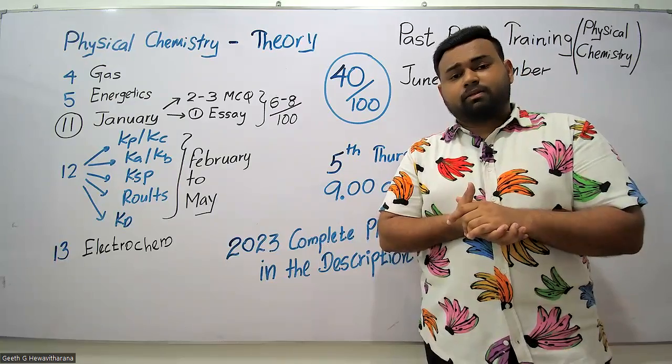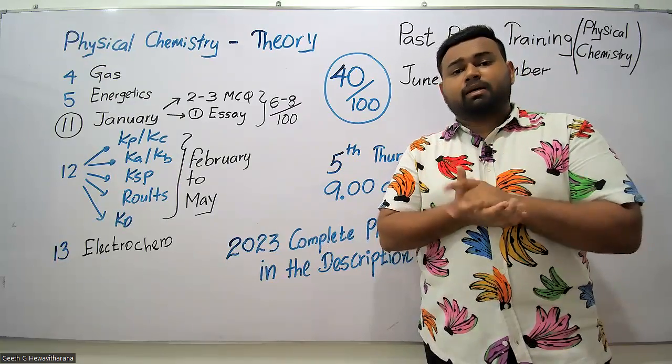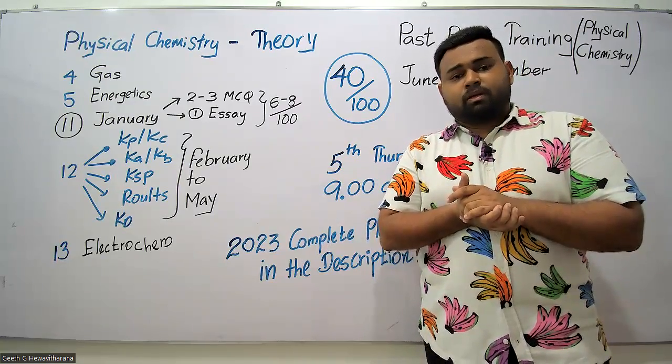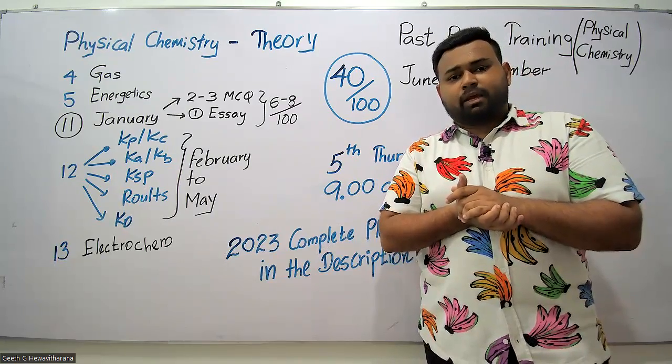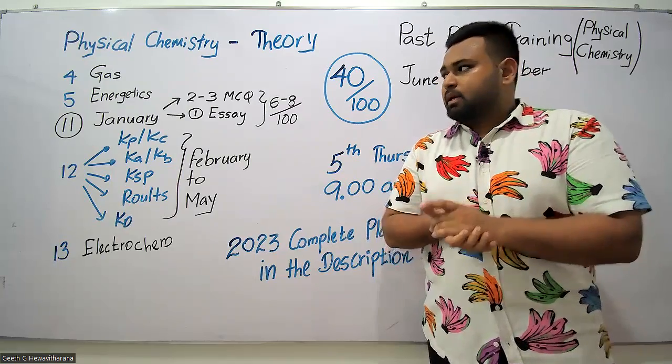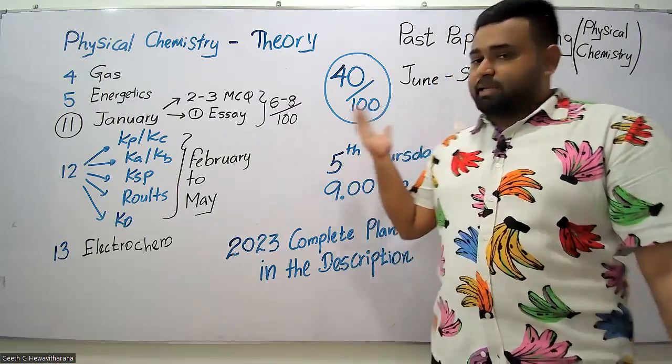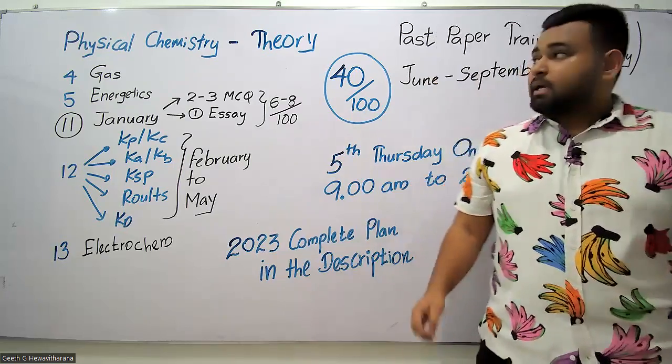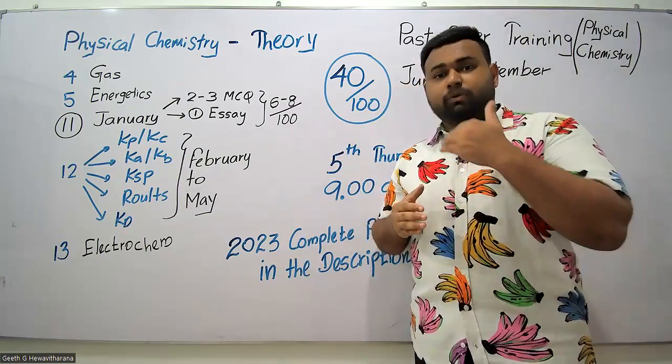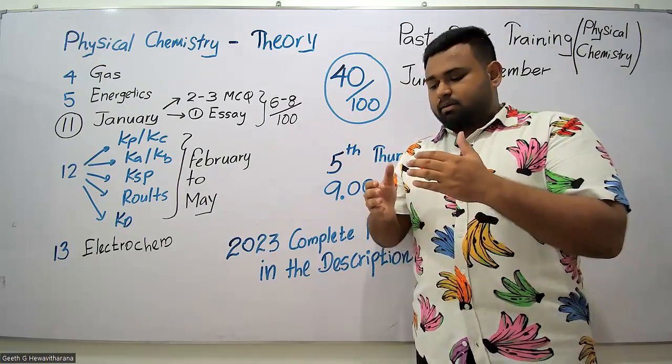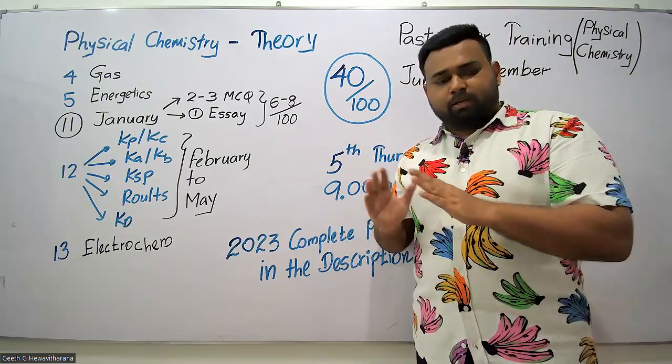You can obtain your A. Definitely go for that and win this battle. Now in my Theory Class for 2023 batch, I have completed up to Unit 10, which means Organic and Inorganic chemistry are completely finished.